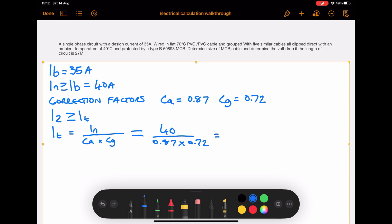So that becomes 40 divided by 0.87 multiplied by 0.72. If we take that forward that becomes 40 divided by 0.626, and that gives us an answer of 63.89 amps.